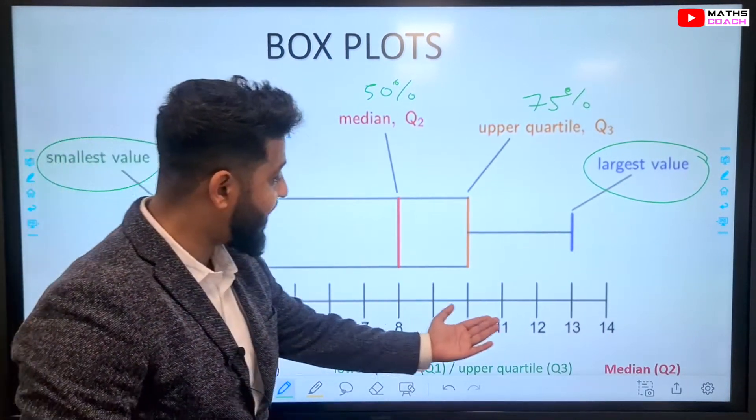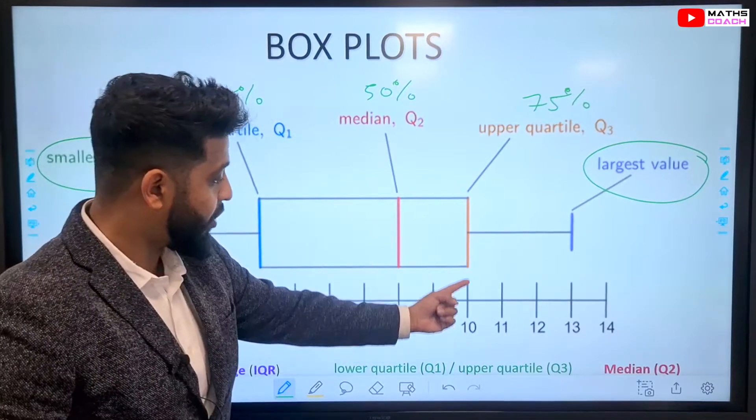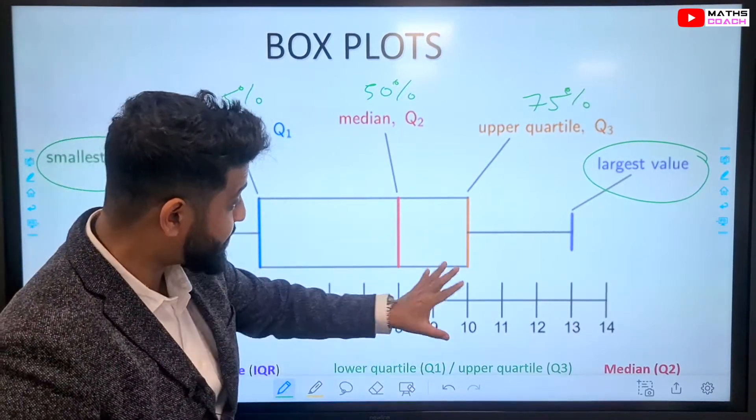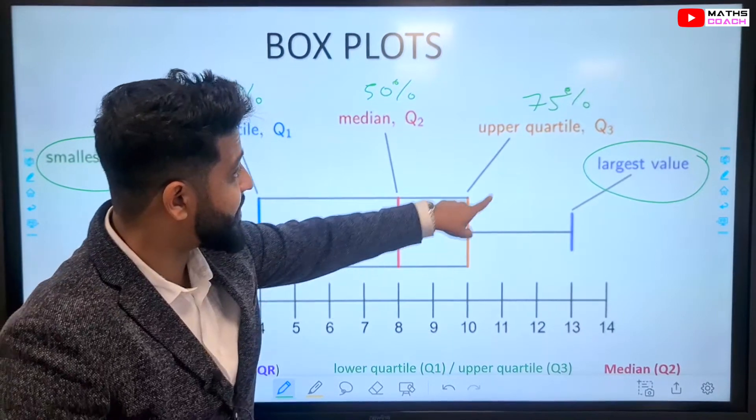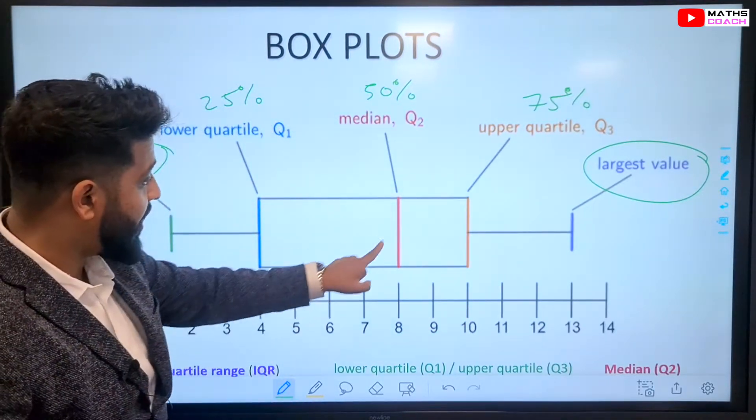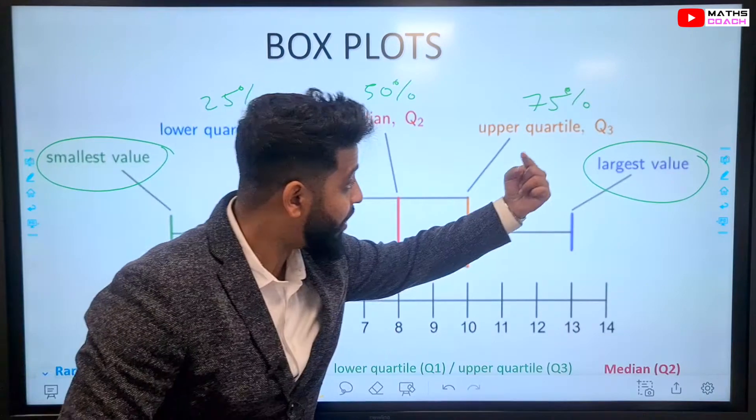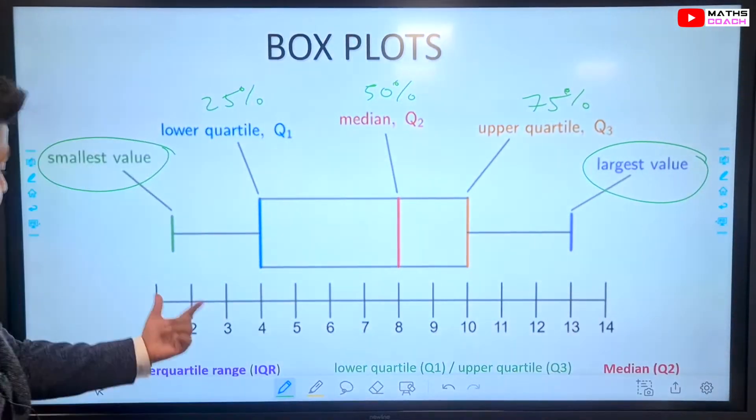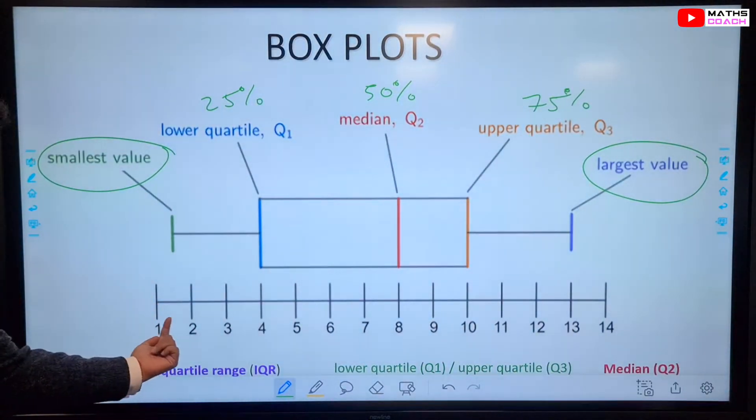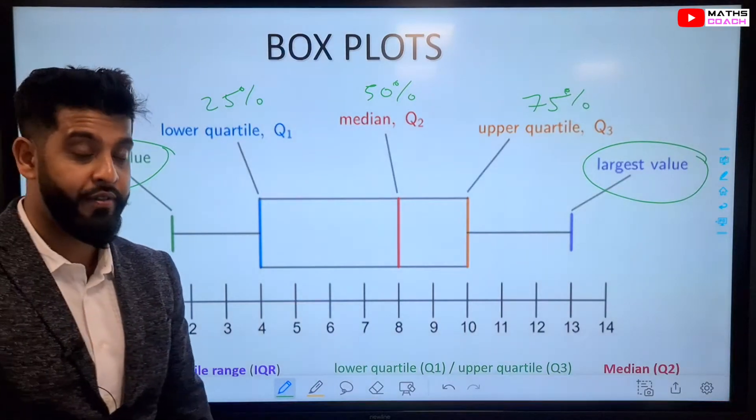You've got the scale here, which tells you what each of those values mean. For example, on this particular one, 10 is our upper quartile, our lower quartile is 4, our median is 8, our largest value is 13, and our smallest value is halfway between 1 and 2, so therefore 1.5.